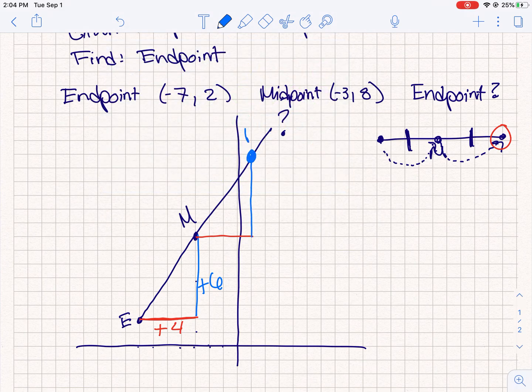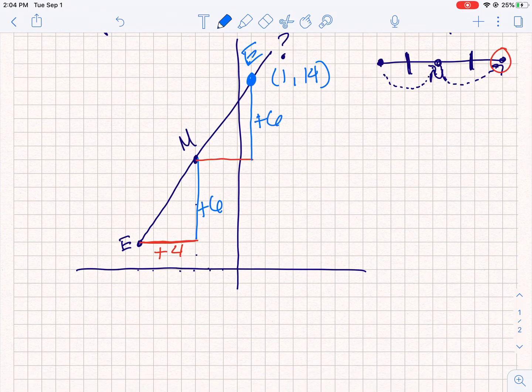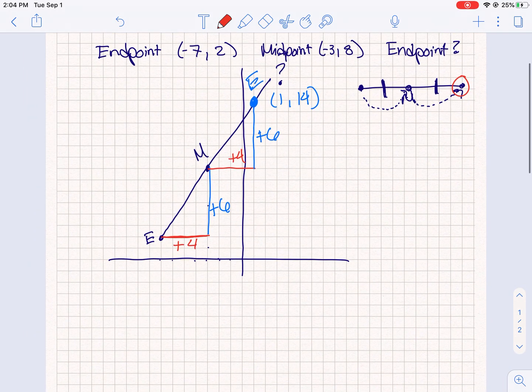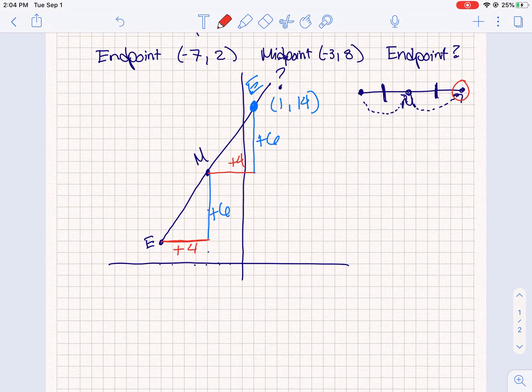So this will be the coordinates of our new endpoint. So it is (1, 14). So let's talk about, here is the +6 and here is the +4, how to kind of see that algebraically without having to graph it. So this would be the answer though, if you didn't catch on.